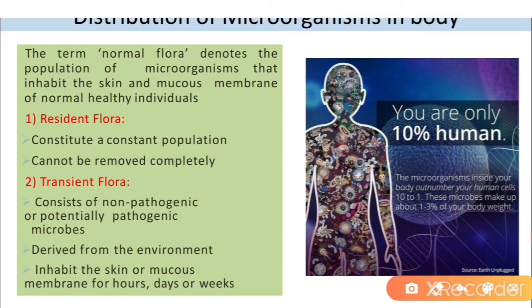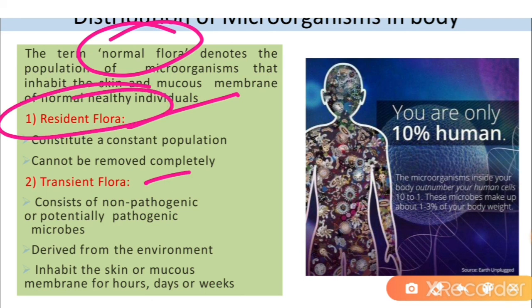The normal microbial flora of the human body refers to microorganisms present on the skin and mucous membranes. It is of two types: residential flora and transient flora. Residential flora is a constant population that cannot be completely removed from the body. Transient flora consists of microorganisms that come onto the body during daily activities like contact with air and soil, and can be completely removed using different disinfecting agents.